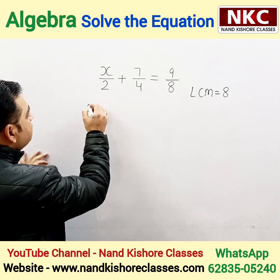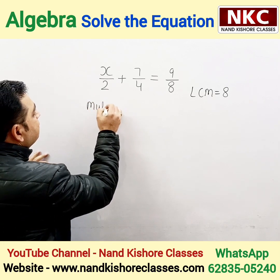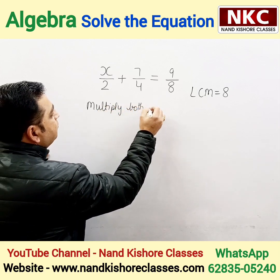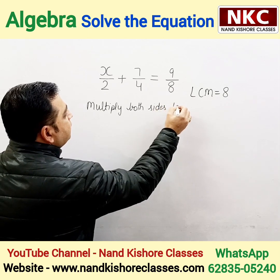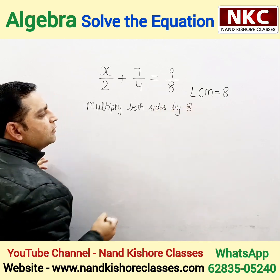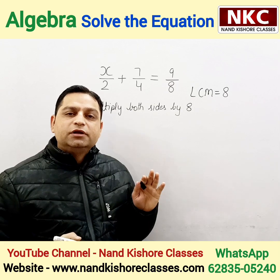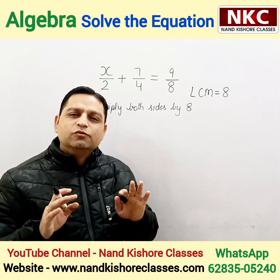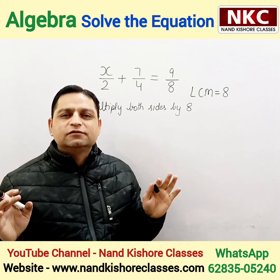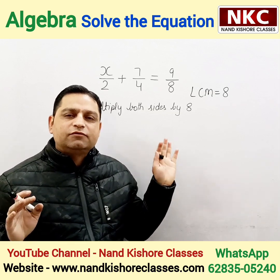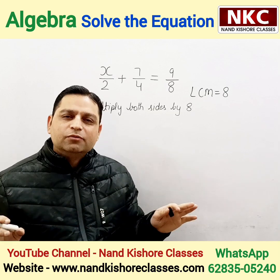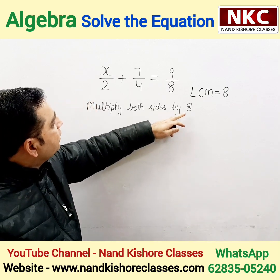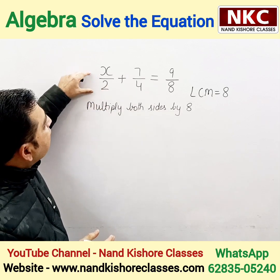Then just do one step: multiply both sides by 8. Why? Because the fractions were disturbing me, so I am going to remove the fractions and remove the denominators. I will be left with only the numerator after doing this step. Find the LCM of all the denominators together, then multiply both sides by that same value — which is 8.